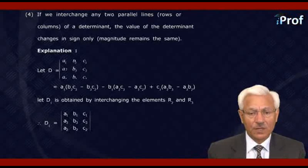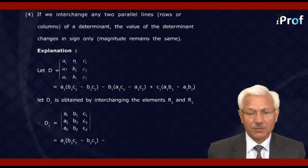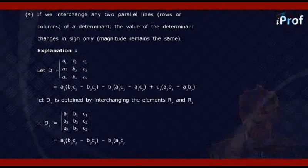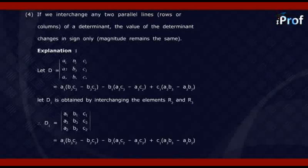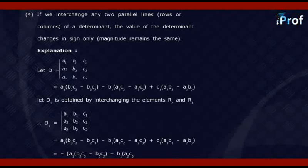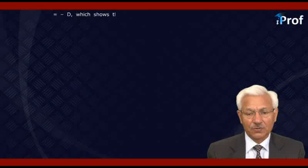Expanding D1: A1 times (B3C2 minus B2C3), minus B1 times (A3C2 minus A2C3), plus C1 times (A3B2 minus A2B3). Taking out the negative sign common from all terms, we get minus times [A1 times (B2C3 minus B3C2) minus B1 times (A2C3 minus A3C2) plus C1 times (A2B3 minus A3B2)], which equals minus D — thus proving the result.